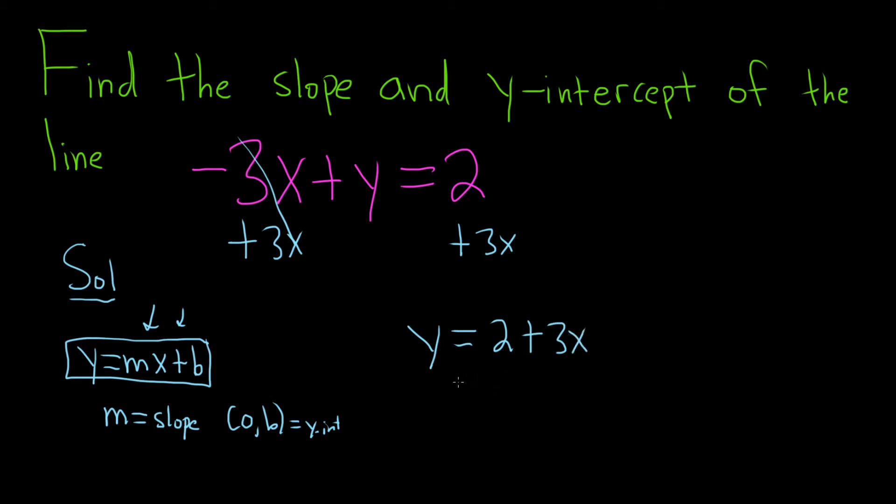Now you might be wondering, hey, that's not correct. We need the x first. Well, we can just switch them because you can do that with addition. It's commutative. So you can write this as 3x plus 2. So now it's in the form mx plus b.